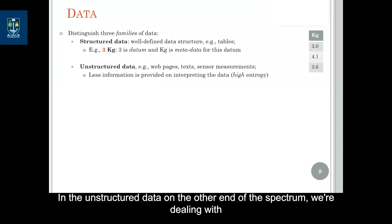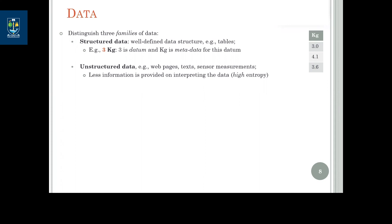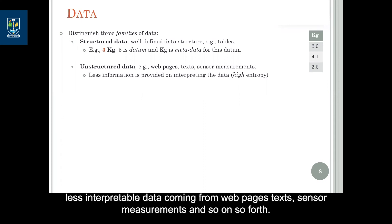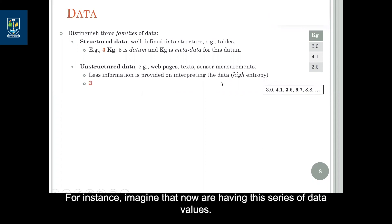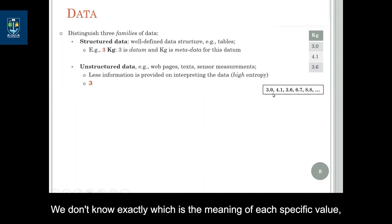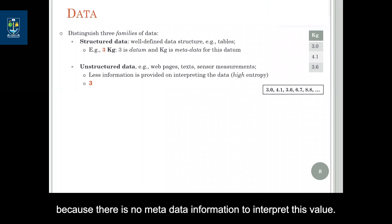In unstructured data, at the other end of the spectrum, we deal with less interpretable data — for instance, data from web pages, text, sensor measurements, and so on. We cannot interpret the data because there is no specific structure. Imagine having a series of data values with no metadata information to interpret which value means what.